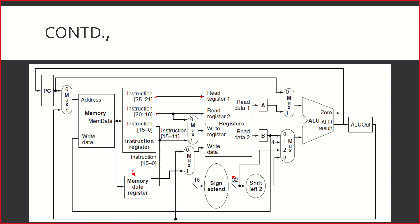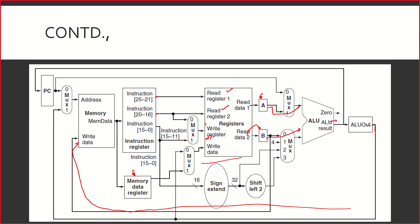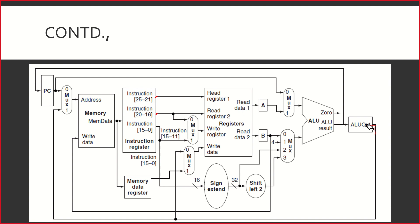We have read register one, read register two, and we know where to write. Now we read data one — the first data from the register file is read and kept temporarily in A; the second data is read into B. Assuming we are working on an R-type instruction, this content comes via the MUX input and goes into the ALU; the B content also goes into the ALU via the appropriate input. We get the result, and it is written back nicely into the write data. This is how we trace through the multi-cycle datapath for a simple add or R-type instruction.